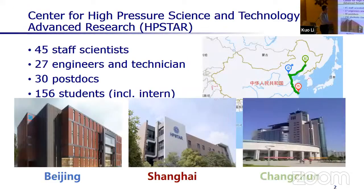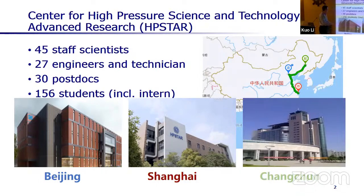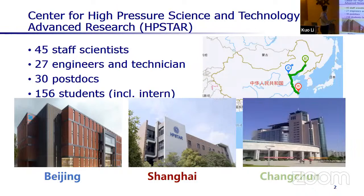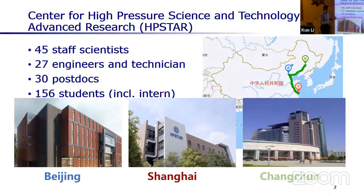First, I'd like to introduce our institute, HPSTAR. We are a pretty new institute, founded 10 years ago. We have three branches: Beijing, which is the headquarters; Shanghai, next to the Shanghai Synchrotron Radiation Facility; and Changchun, where we have a lab on the campus of Jilin University. We have more than 40 staff scientists in total, and more than 100 students across all three branches.